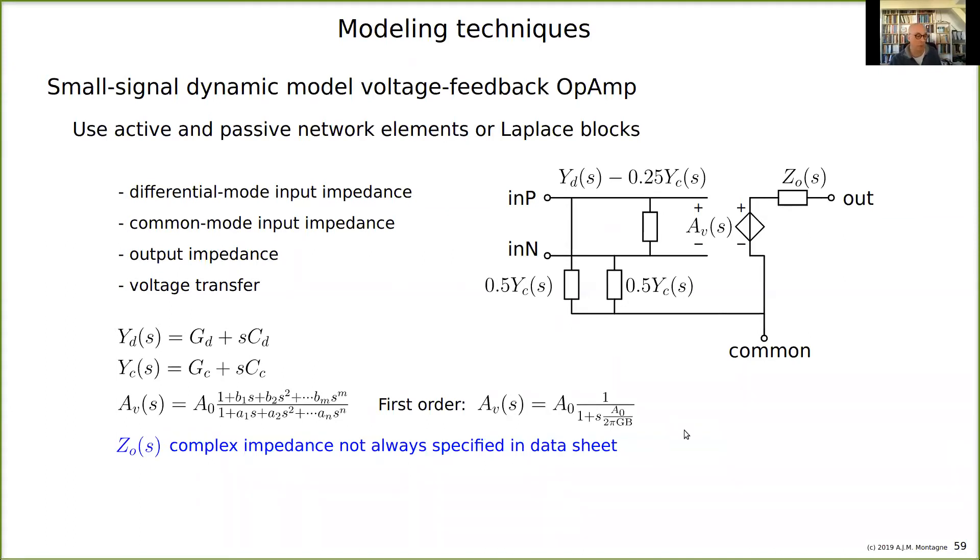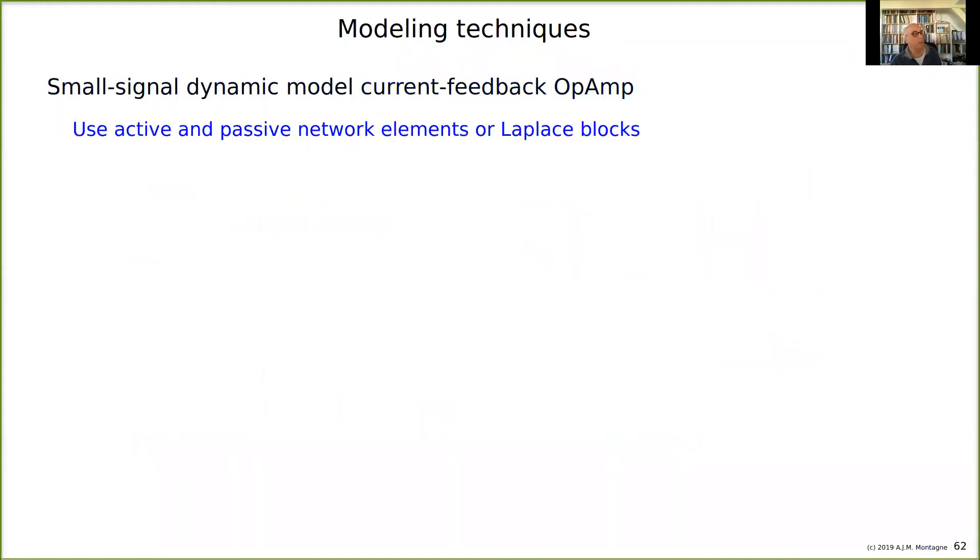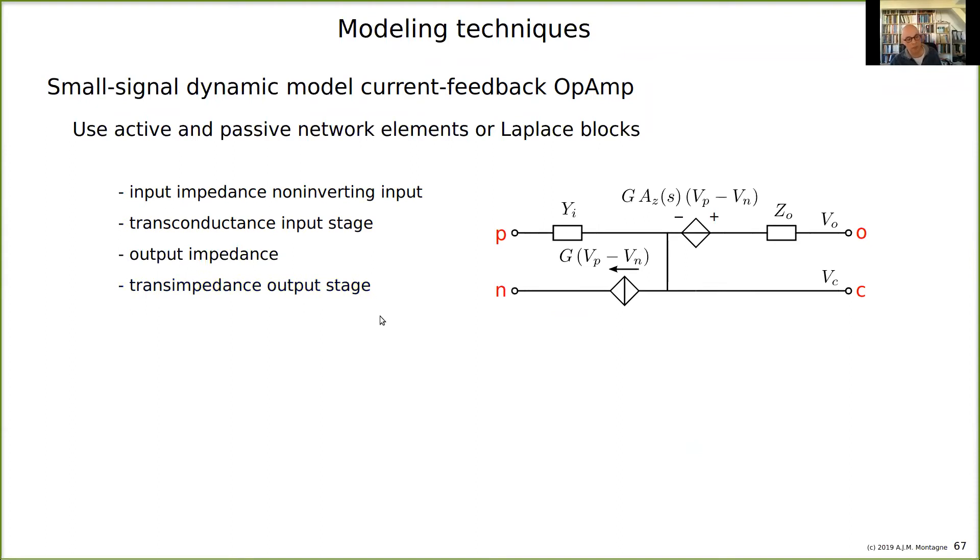For a current feedback operational amplifier, it's completely different. You have the input impedance from non-inverting input to ground specified, the transconductance of an input stage, the output impedance, and the transimpedance of an output stage. It's a kind of two-stage op amp and it looks like this in the equivalent model. Here is the input impedance.